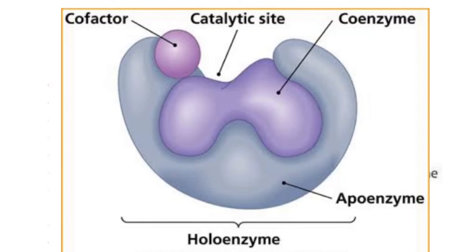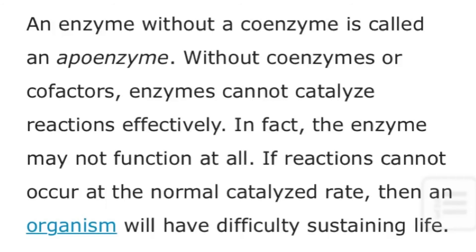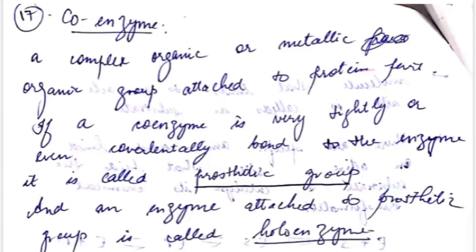Coenzyme is a complex organic or metallo-organic group attached to a protein part. Coenzymes are often called cofactors but they are chemically different. A coenzyme cannot function alone but can be reused several times when paired with an enzyme. An enzyme without a coenzyme is called an apoenzyme. Without coenzymes or cofactors, enzymes cannot catalyze properly. Coenzymes are reusable non-protein molecules that contain carbon and can bind loosely to an enzyme at the active site. Some examples include vitamins like NAD, FAD, and TPP.